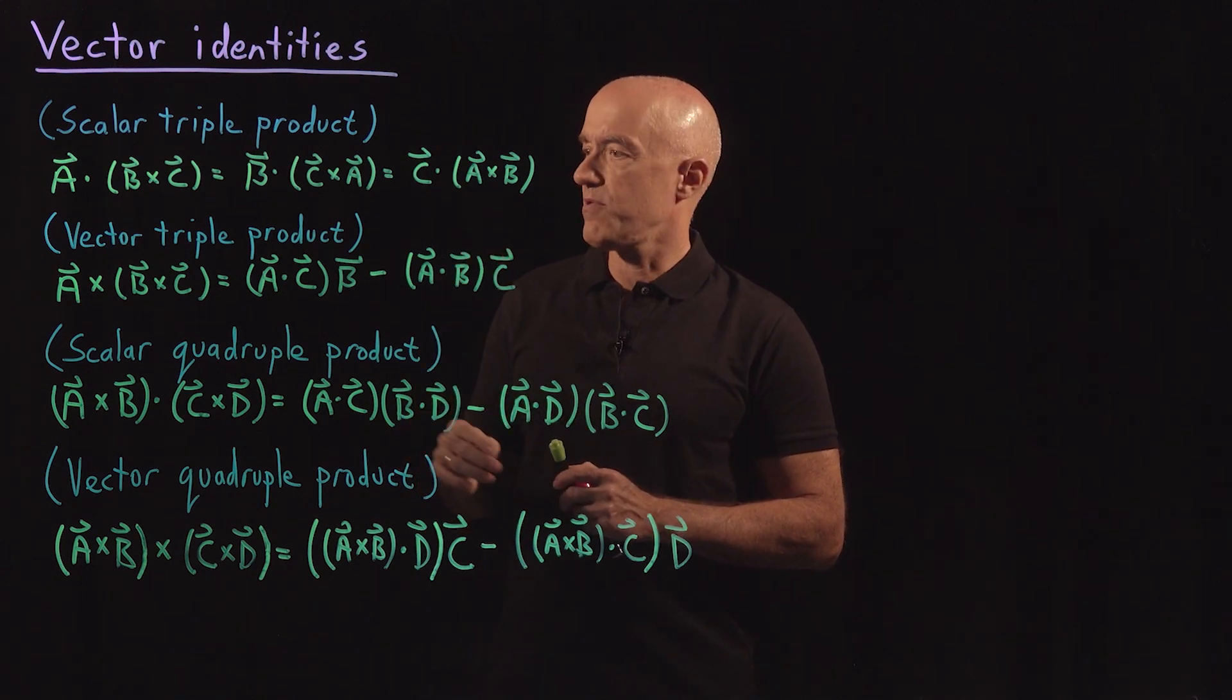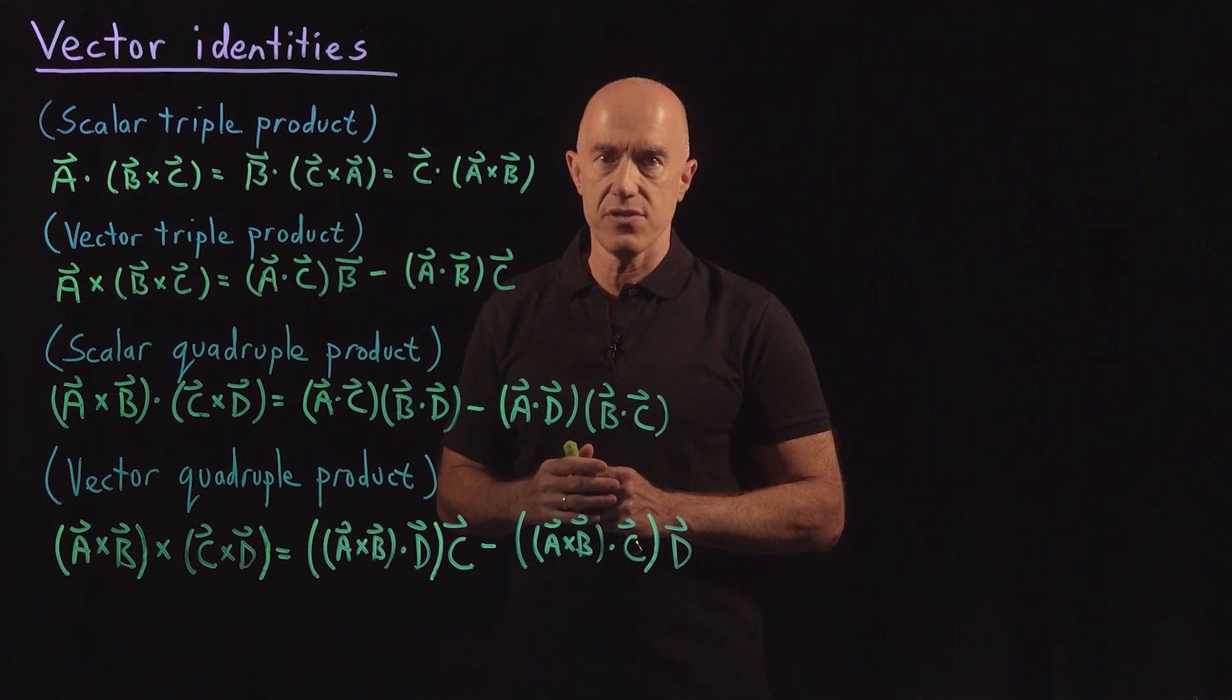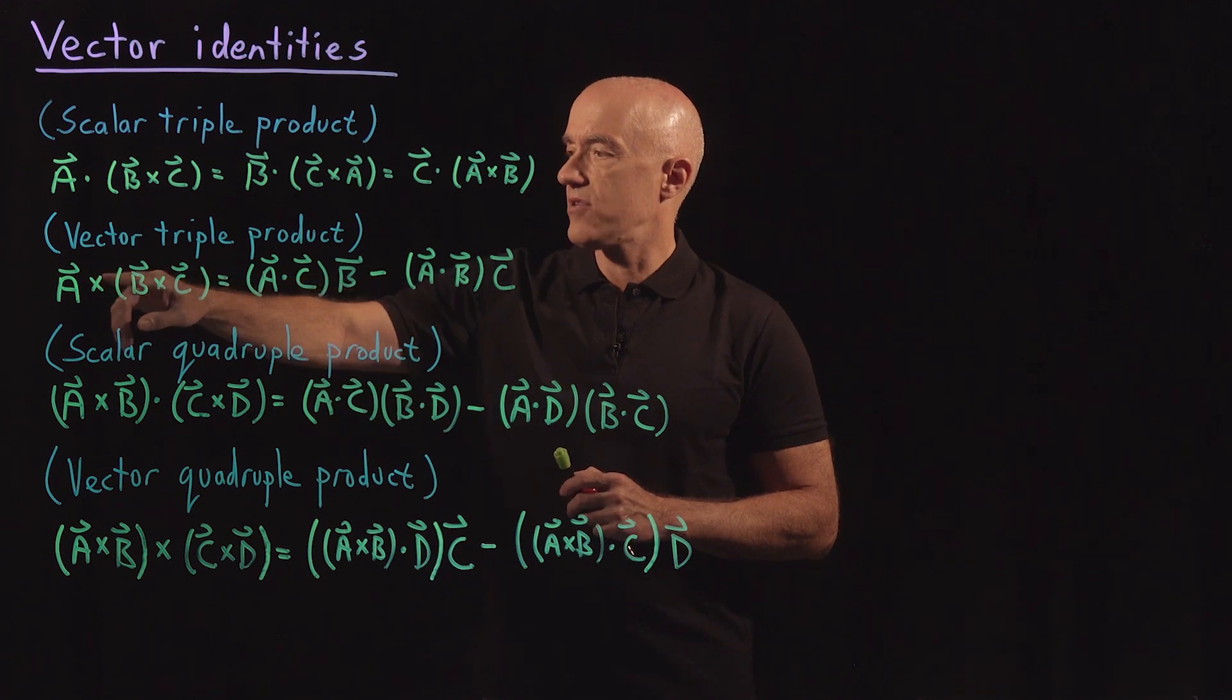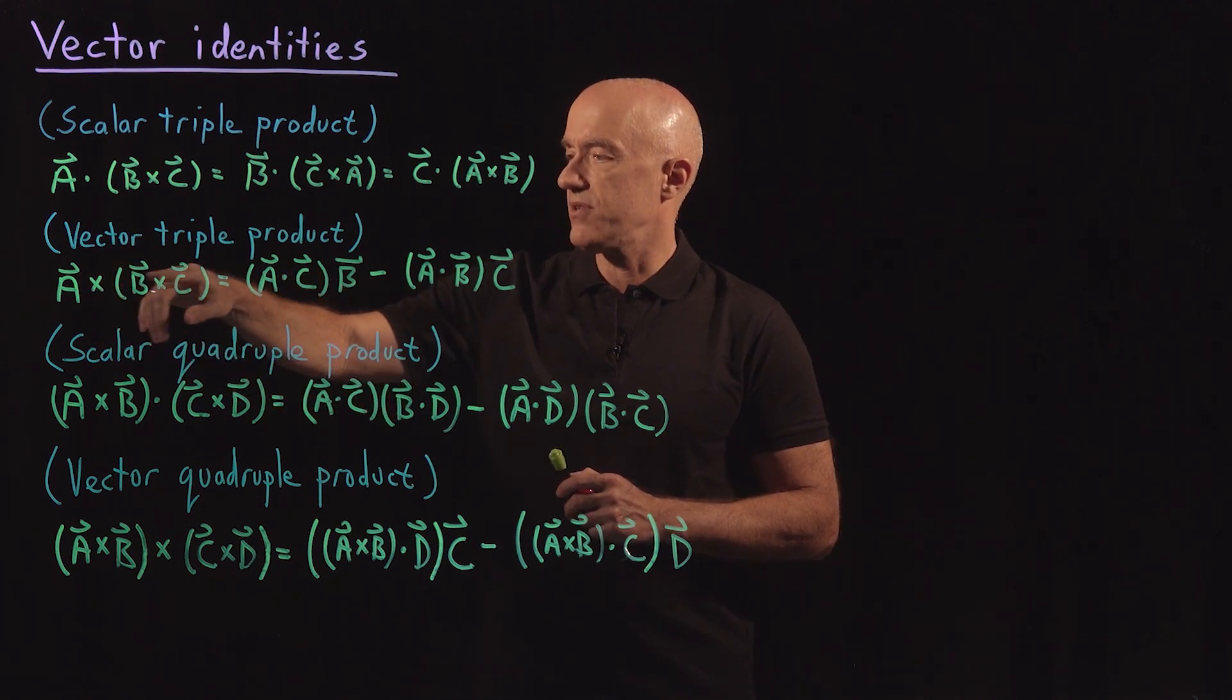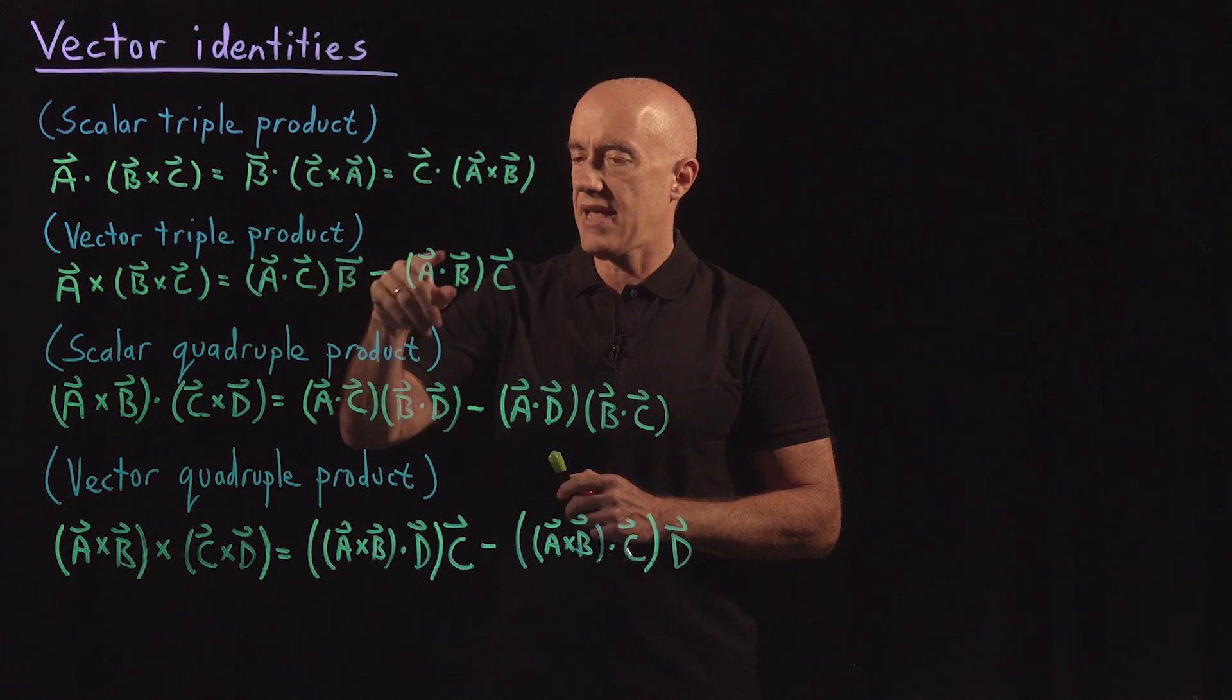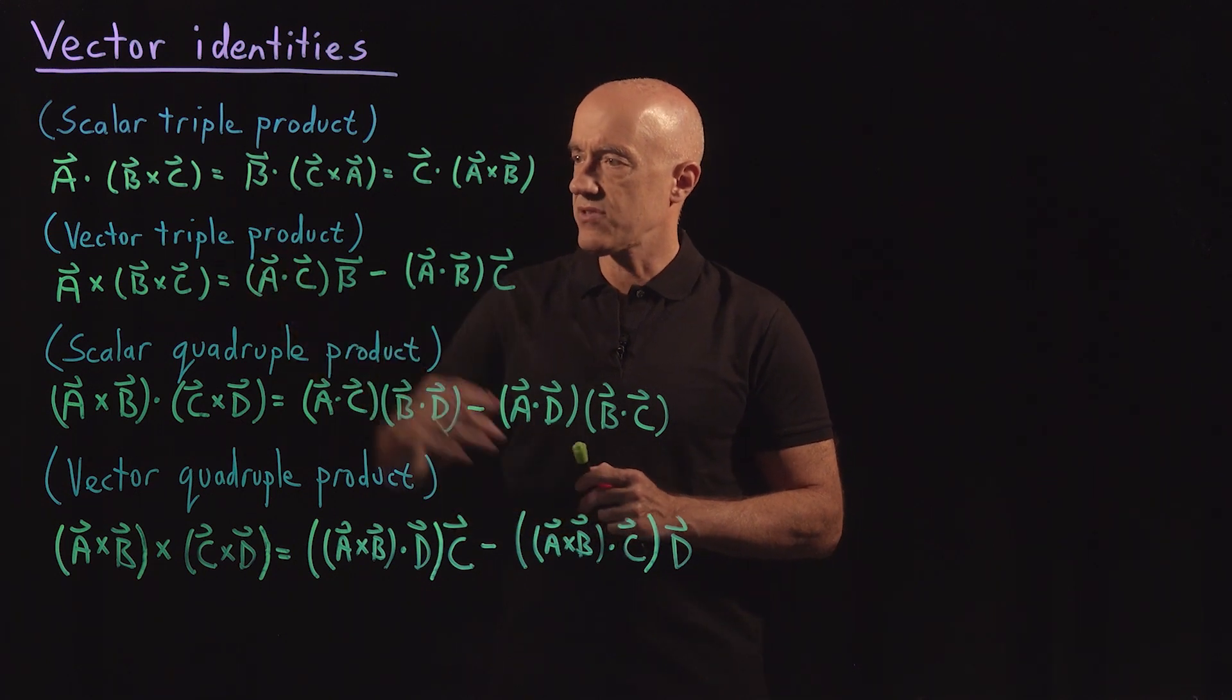The vector triple product is also having to do with three vectors. But this is a vector vector identity. Here A cross (B cross C). So B cross C is a vector and A cross a vector is a vector. It says that A cross (B cross C) is equal to (A dot C), a scalar, times B, a vector, minus (A dot B), a scalar, times C, a vector. That's the vector triple product.